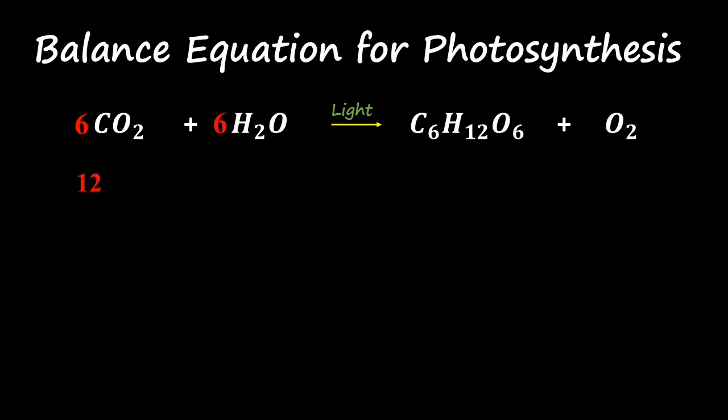So all we have left to balance is the oxygen. Right now oxygen got 12 from carbon dioxide and we have six from water. And on the right side we have six from glucose and we have two from oxygen right here. So we have 18 in total over here, and if you want to make 18 on the right side...